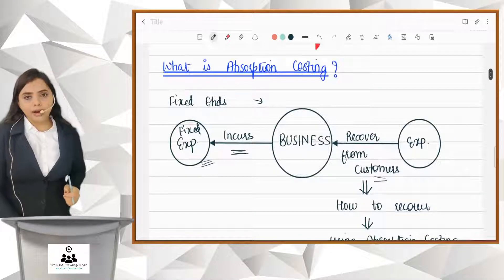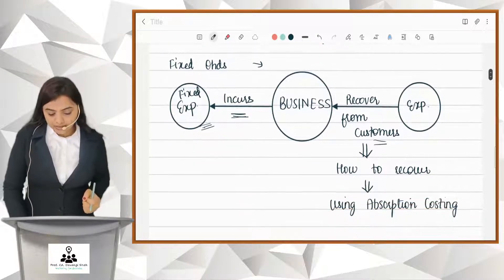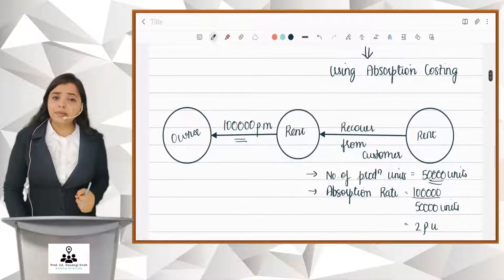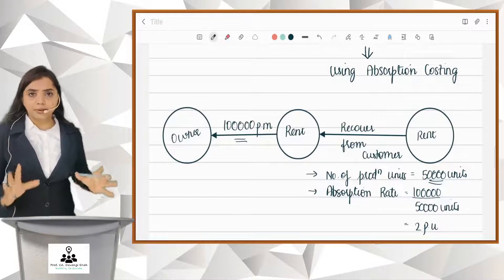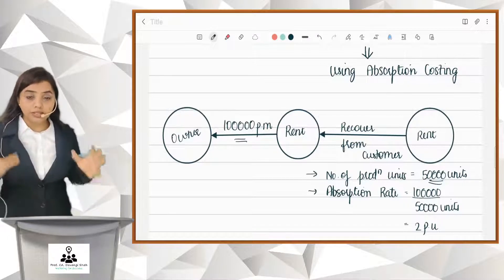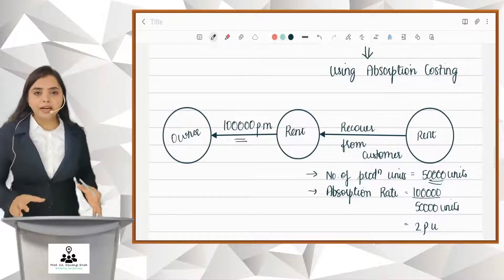Let's have an example. Say my classroom rent or factory rent is 1 lakh per month that I pay to the owner. So this is a fixed overhead incurred by the business. Now this expense has to be recovered from the customer.